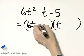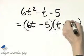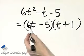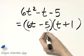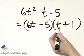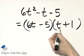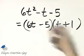And factors of 5. Let's try negative 5 and positive 1. Checking the outside terms, that's 6T minus 5T. That's 1T or T, but it's a positive T, and we need a negative T.